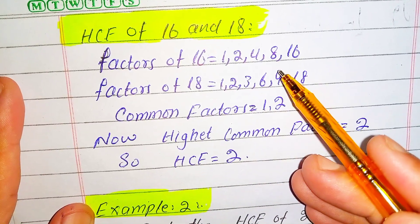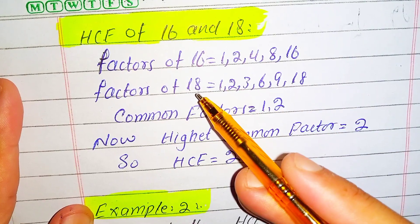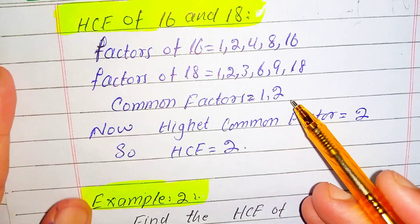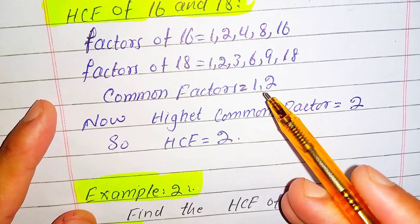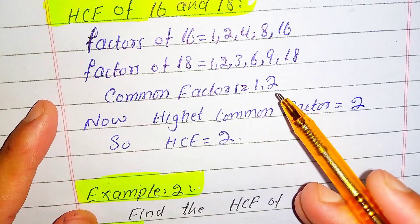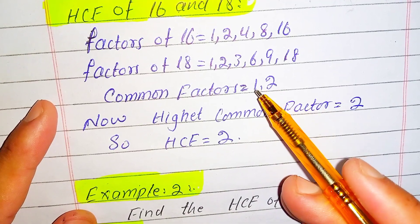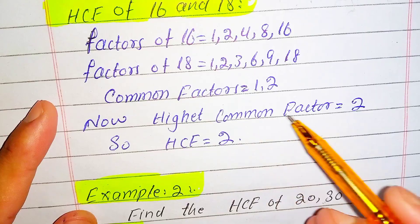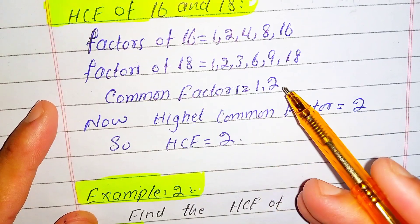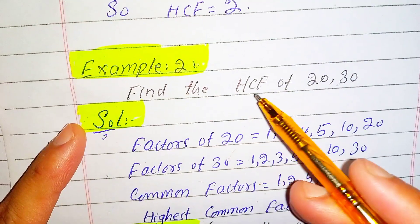The common factors of 16 and 18 are 1 and 2. There is no other number which is a common factor of both 16 and 18 simultaneously. The highest common factor of 16 and 18 is 2, because 2 is greater than 1. So the HCF of 16 and 18 is 2. Now, Example 2: find the HCF of 20 and 30.